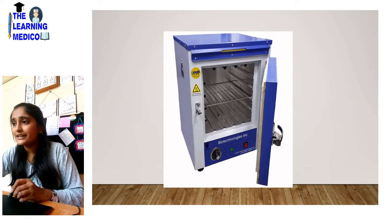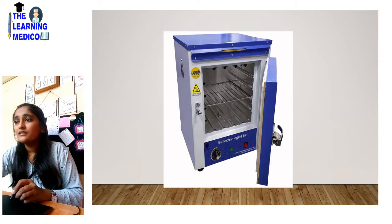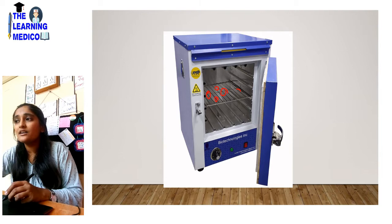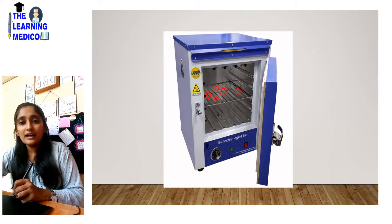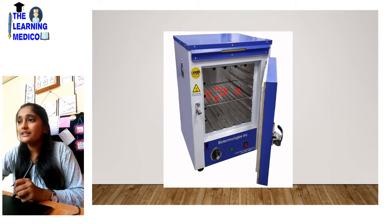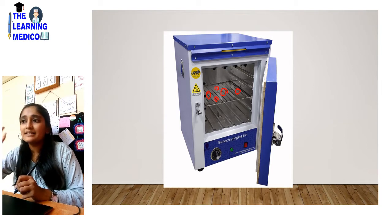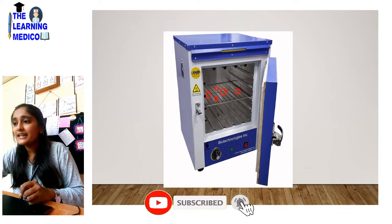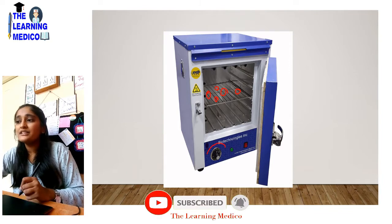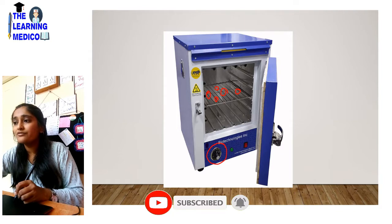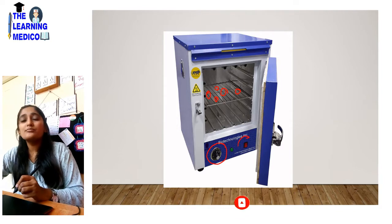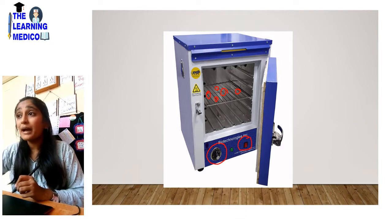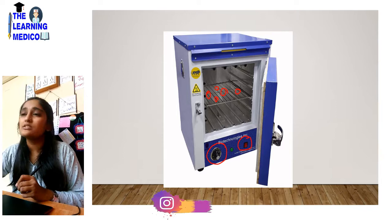This is the hot air oven — this is the chamber, which is electrically heated. This is the temperature control, and this is the on/off button. When you see it practically in your lab, you will understand it better.